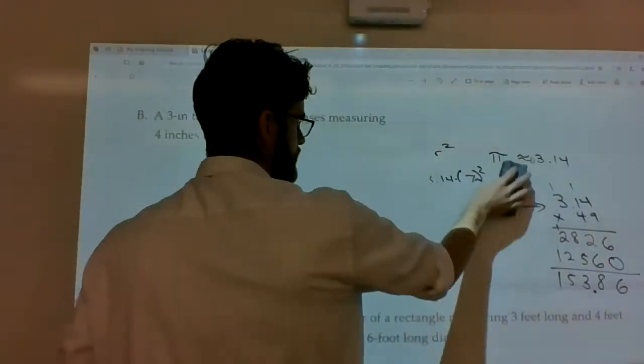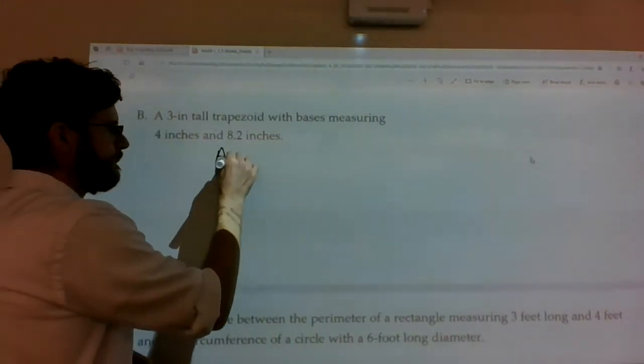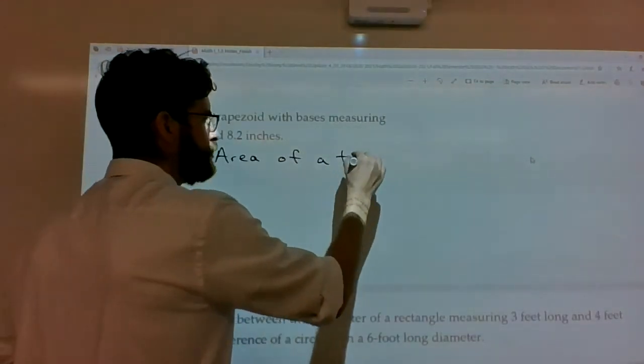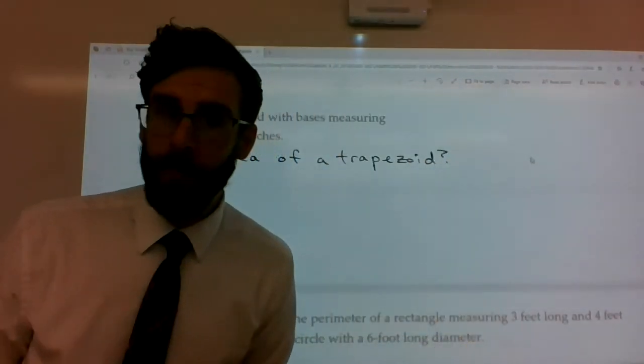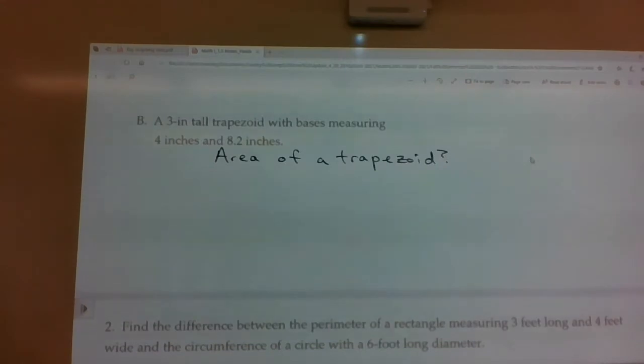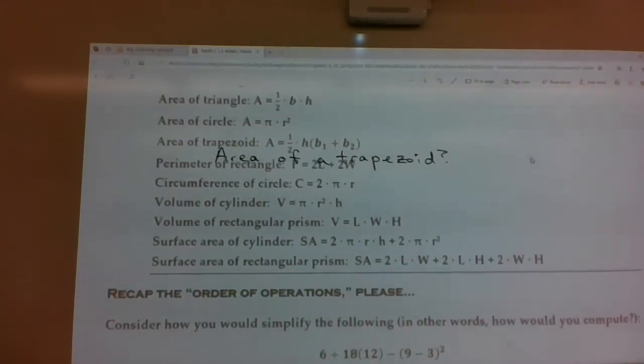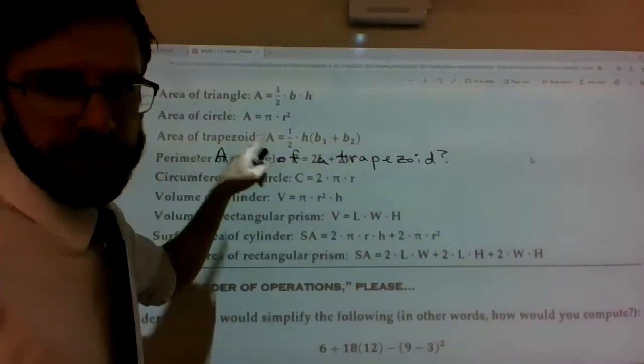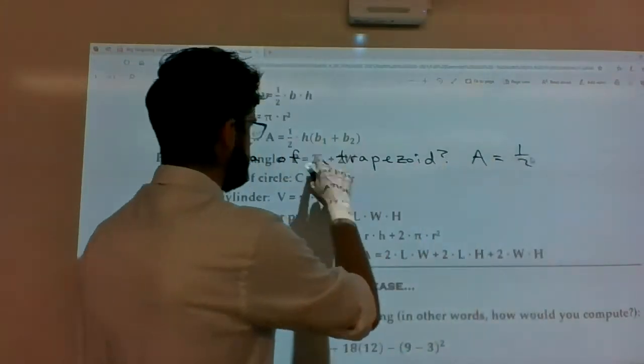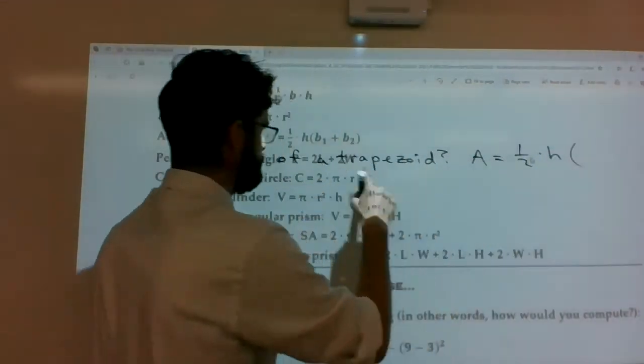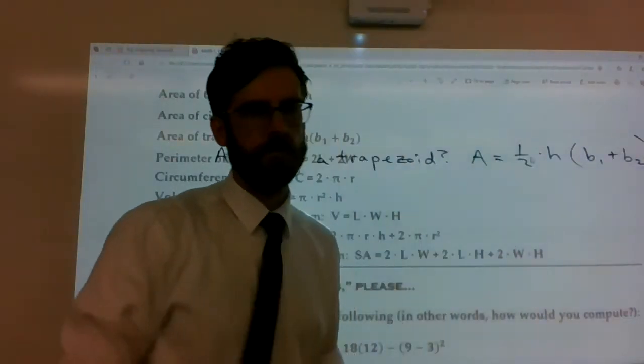How about a trapezoid? What is the area of a trapezoid? Well, let's scroll back up and check it out. Got it. Right there. The area of a trapezoid is A equals one half times the height. And it's just put side by side with b1 plus b2. Alright, let's unpack that.